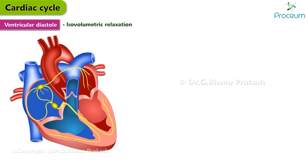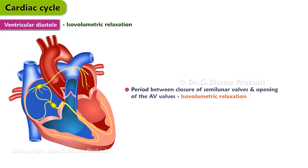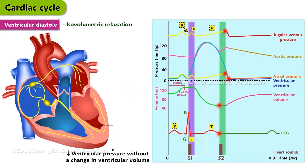Isovolumetric relaxation. The period between closure of the semilunar valves and opening of the atrioventricular valves is termed isovolumetric relaxation. It is characterized by a precipitous fall in ventricular pressure without a change in ventricular volume. The beginning of the isoelectric TP segment is recorded on the EKG.